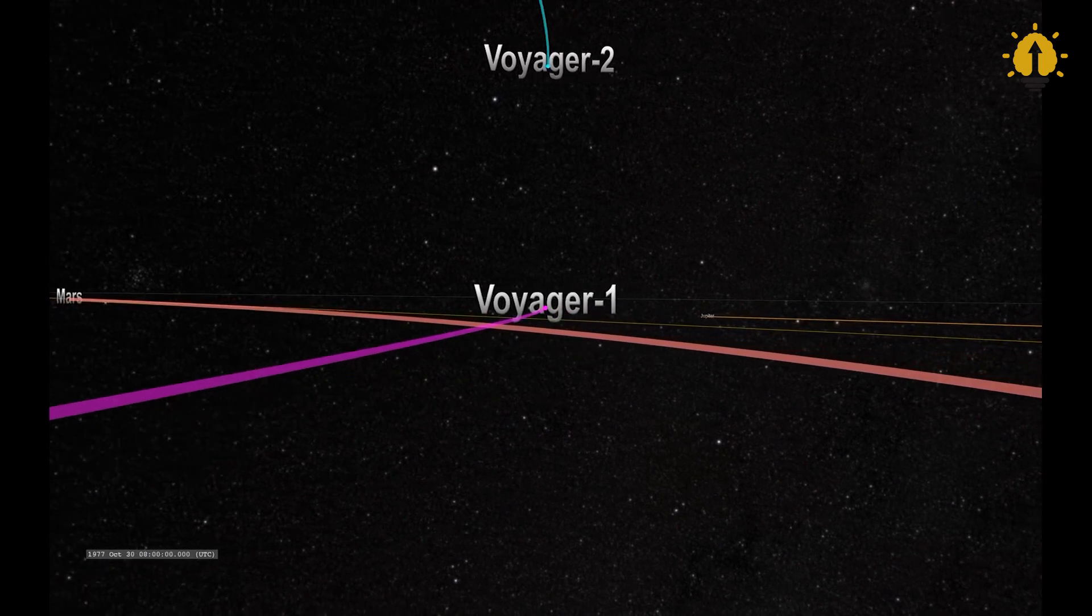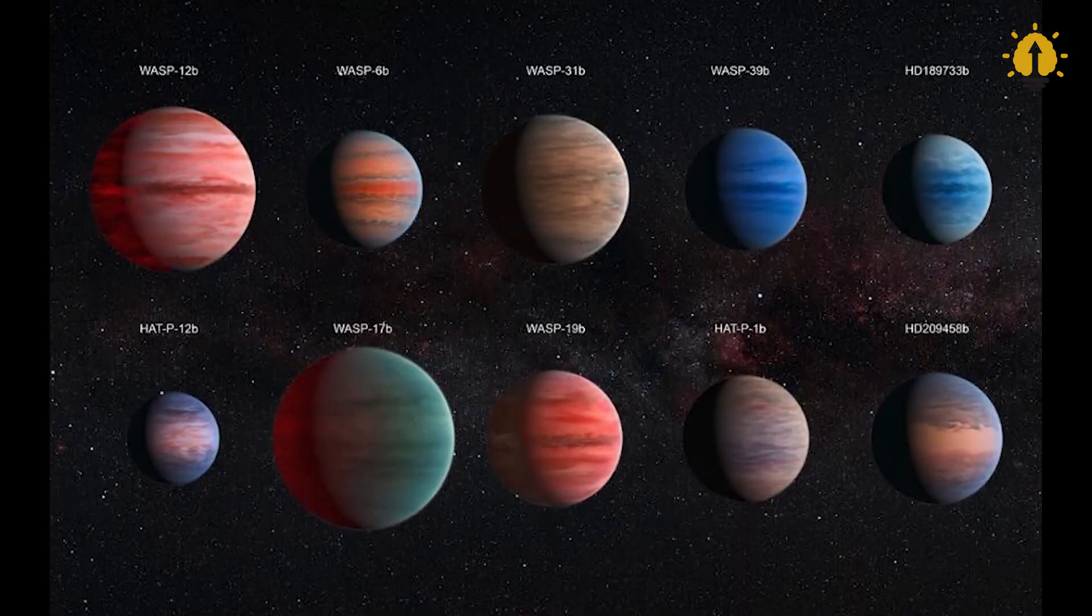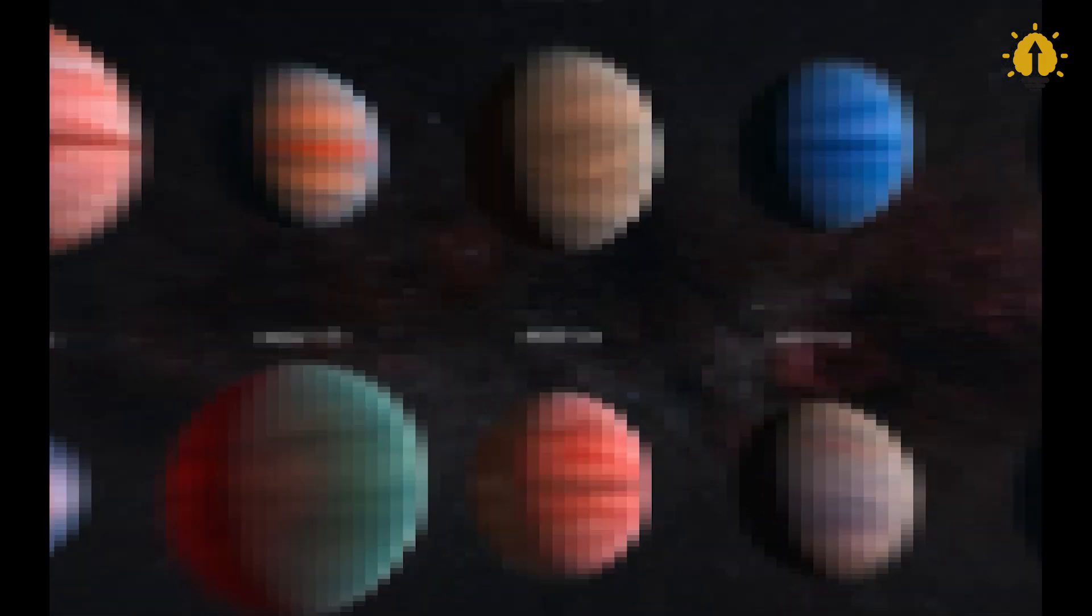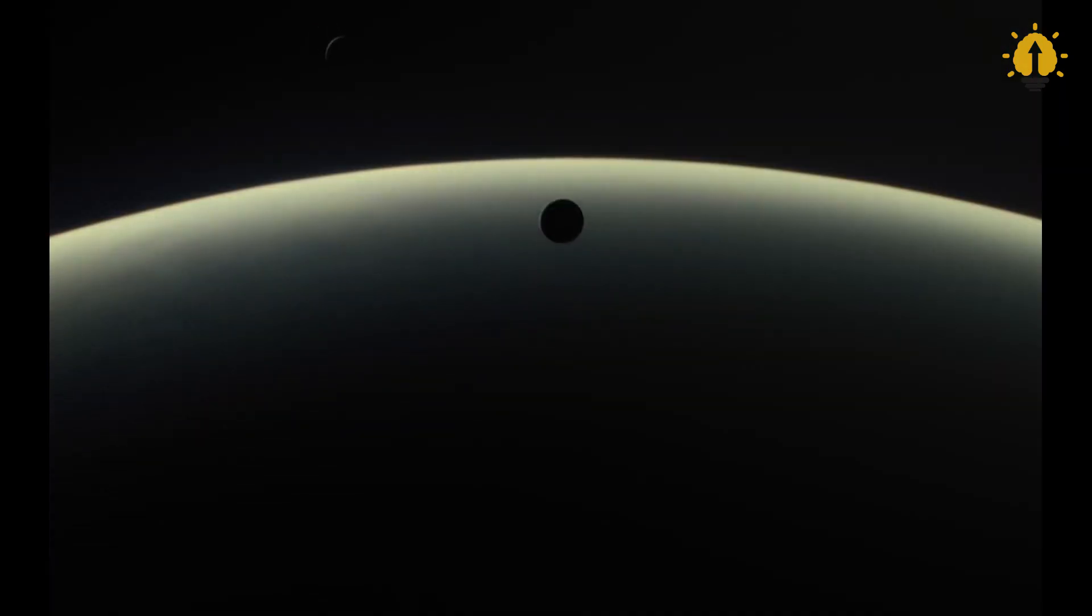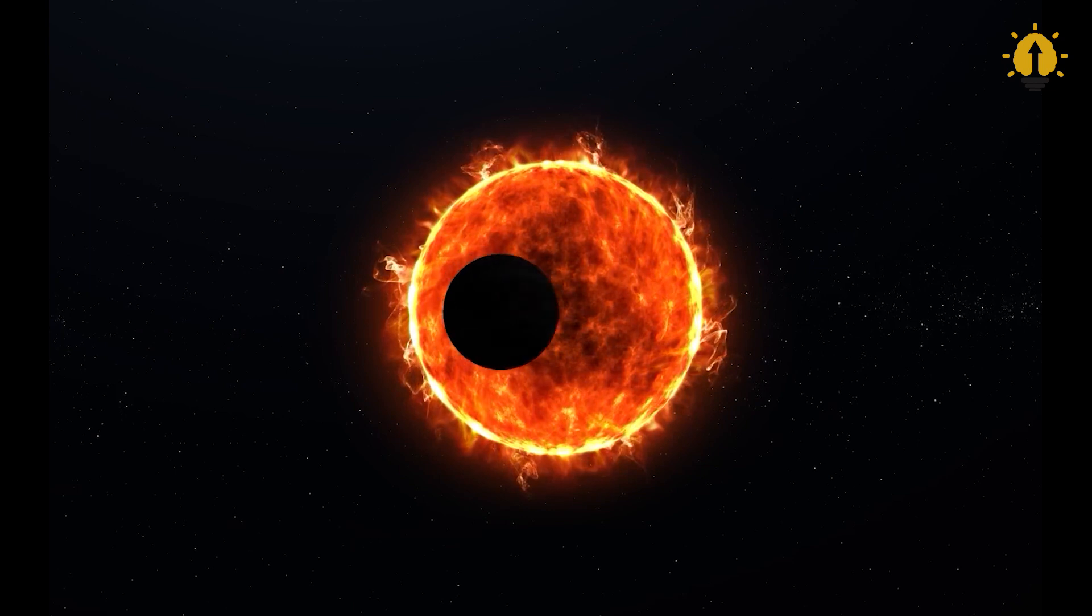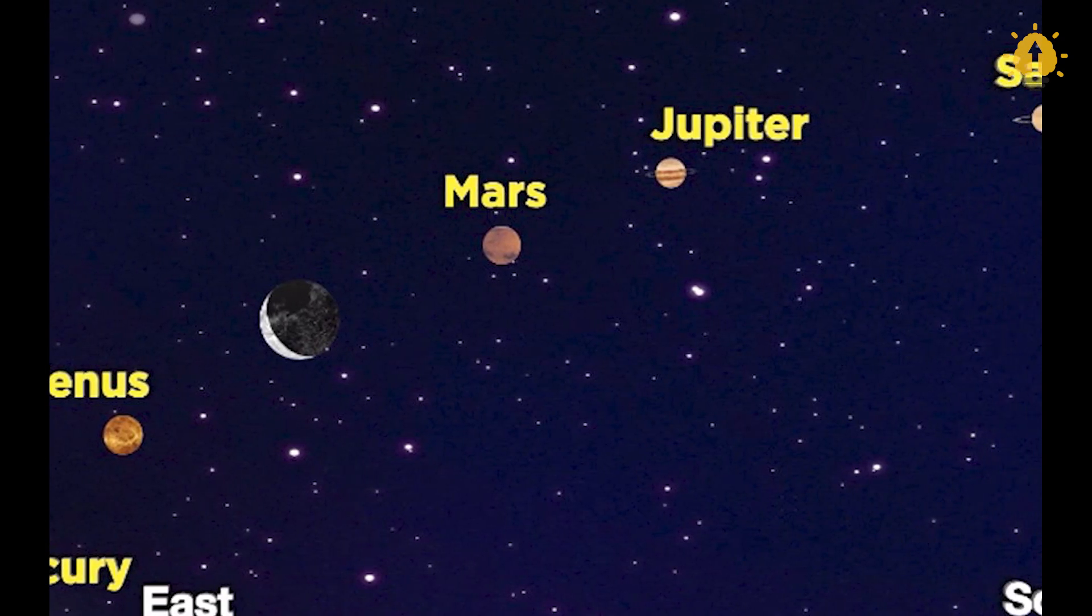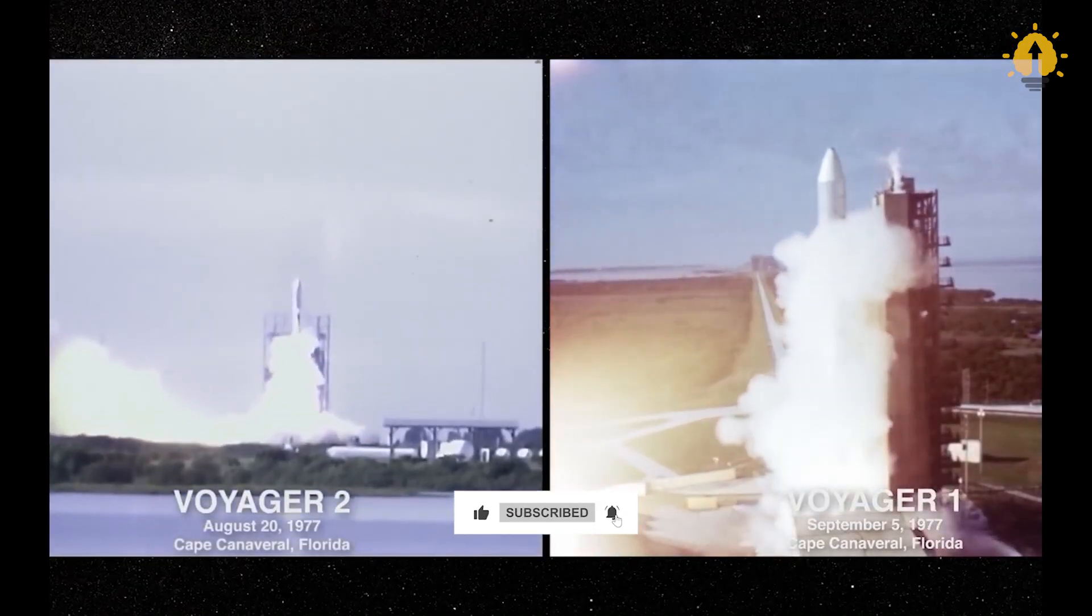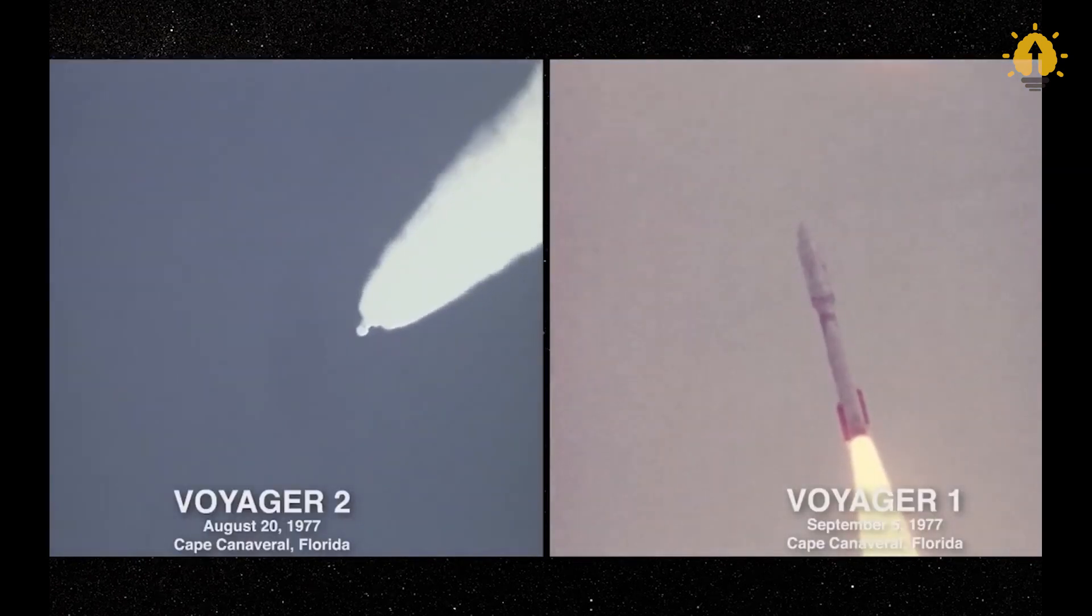Voyager 1 and Voyager 2 wouldn't have been able to do the extraordinary things we see today if the biggest planets in our solar system hadn't lined up at the time. Because of this lucky situation, the spacecraft could use the pull of these big planets to speed up, like a hidden rope pulling them along. However, this planetary alignment only happens once every 176 years. As it turned out, NASA created two spacecraft to make the most of that once-in-a-lifetime chance.